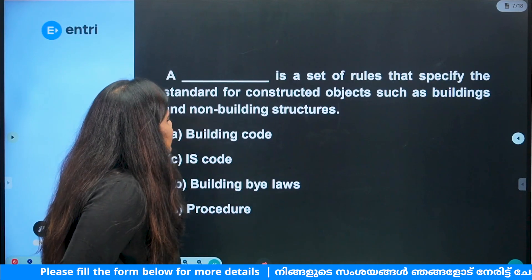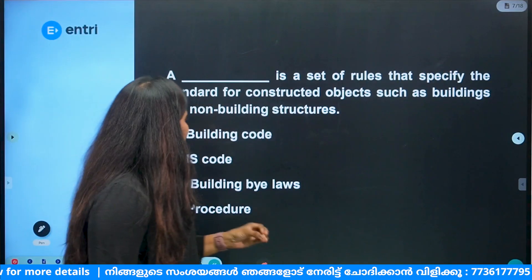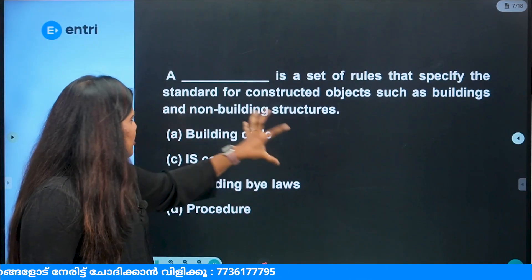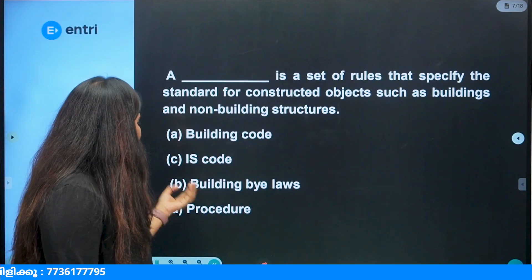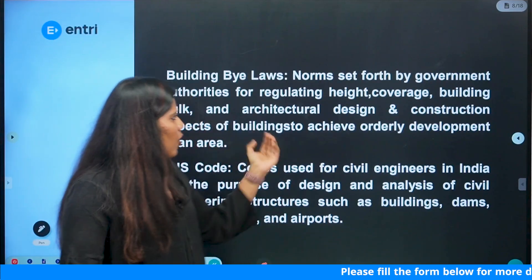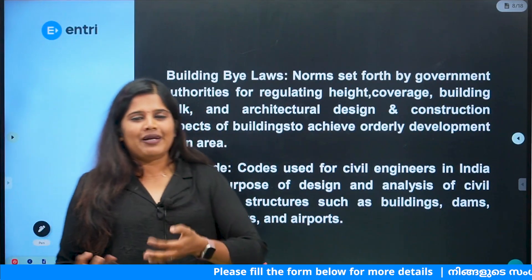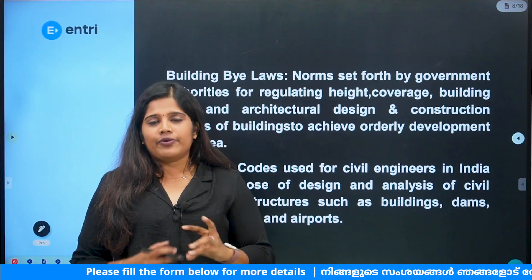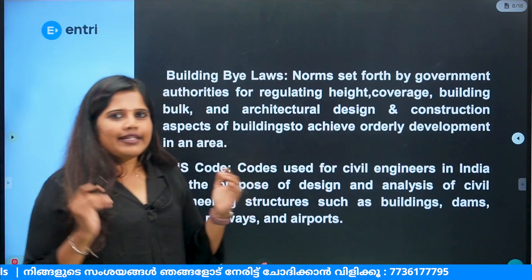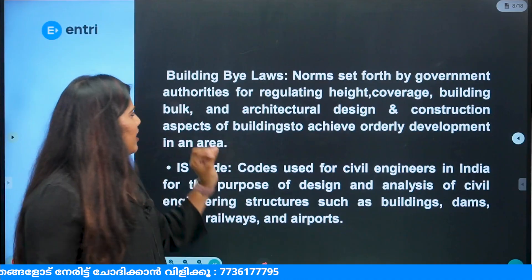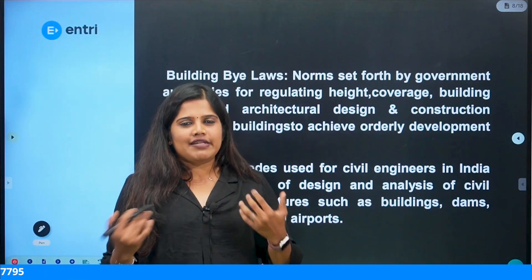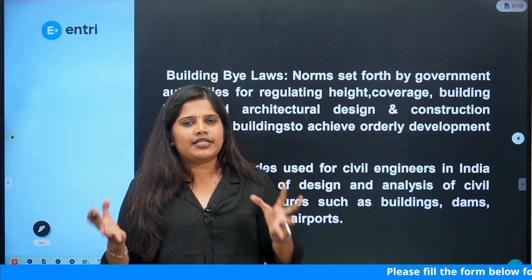Next question: a dash is a set of rules that specify the standard for constructed objects such as buildings and non-building structures. That is what we call building code, IS code, or building bylaws. We call it building bylaws — there are rules and norms from government authorities. We call it Kerala Municipal Building Rules, KMBR. IS code is used for design and analysis of civil engineering projects — Indian Standard code.